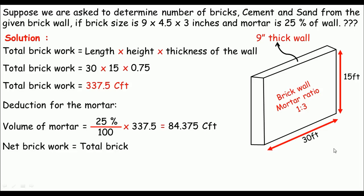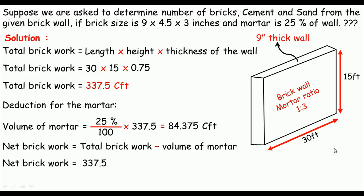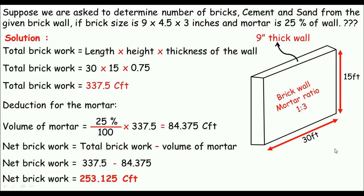If we subtract the volume of mortar from the total brickwork, we get the net brickwork: 337.5 − 84.375 = 253.125 cft.